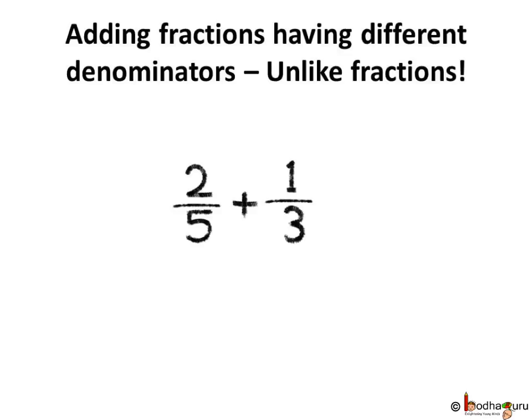But when we are adding 2 by 5 and 1 by 3, the denominators are different and they are called unlike fractions. So we need to make the denominators the same — that is, make them like fractions — to add them easily. We cannot convert 3 to 5 or vice versa. In this case we need to change both the denominators to a common number.